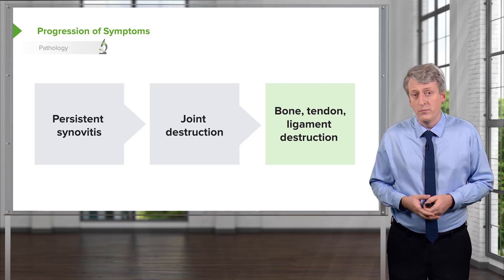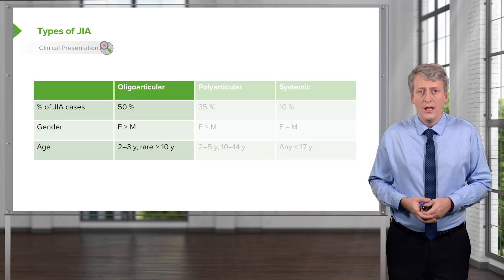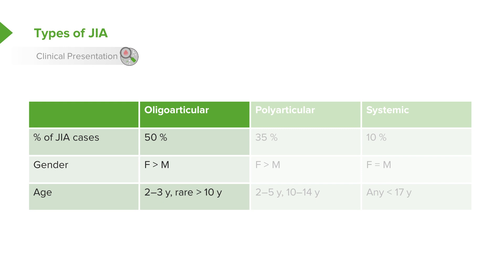Oligoarticular JIA represents about half of cases. Females are more commonly affected than males, and onset is really in the two to three year range — it would be very rare for this disease to present after 10 years of age. Polyarticular JIA is about a third of cases. Females are again more affected than males, and there seem to be two peaks: between 2 and 5, and between 10 and 14.